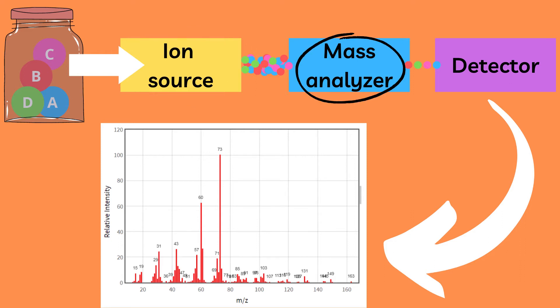However, magnetic sector mass spectrometry is a type of mass analyzer. Simply put, it is the part responsible for measuring how large different ions in the sample are.